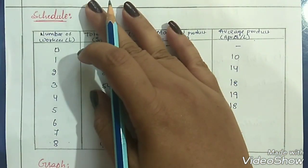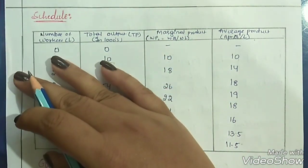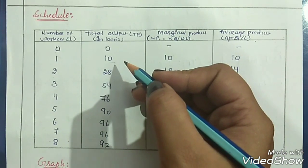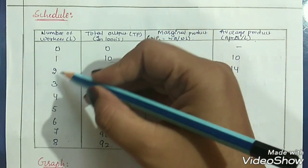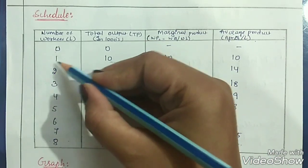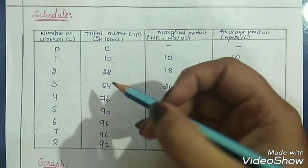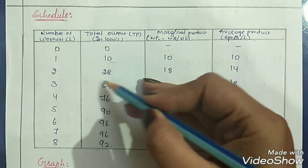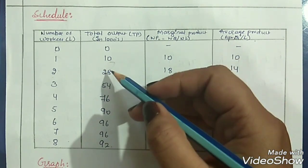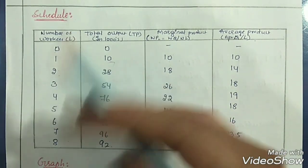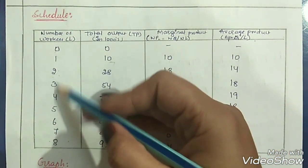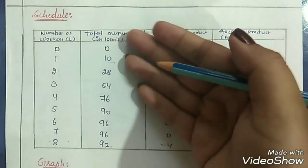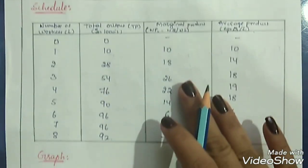When we start production with 1 labor, we can produce around 10 cars in a day. When we increase labor from 1 to 2, total product increases from 10 to 28. As we keep increasing labors, total product also keeps increasing.